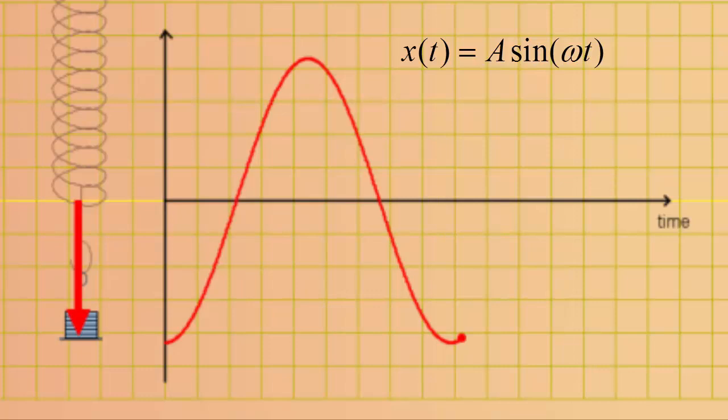In oscillatory motion, the mass does not begin to oscillate until we move it away from its center position and release it. So the mass starts oscillating from its displacement at the amplitude.